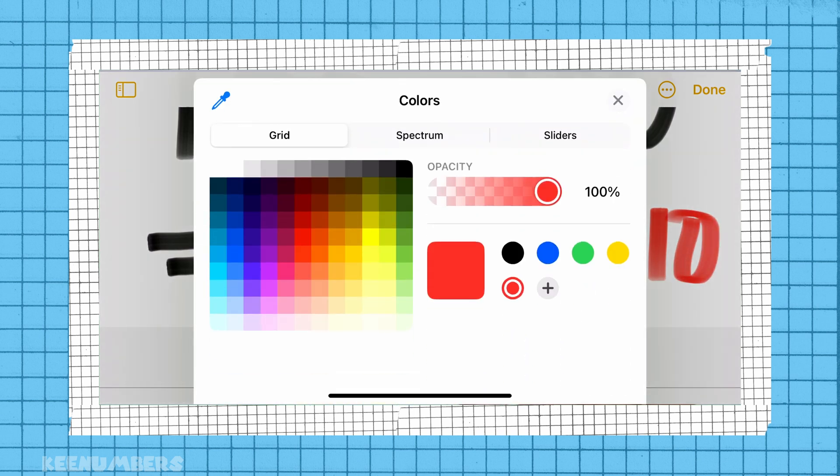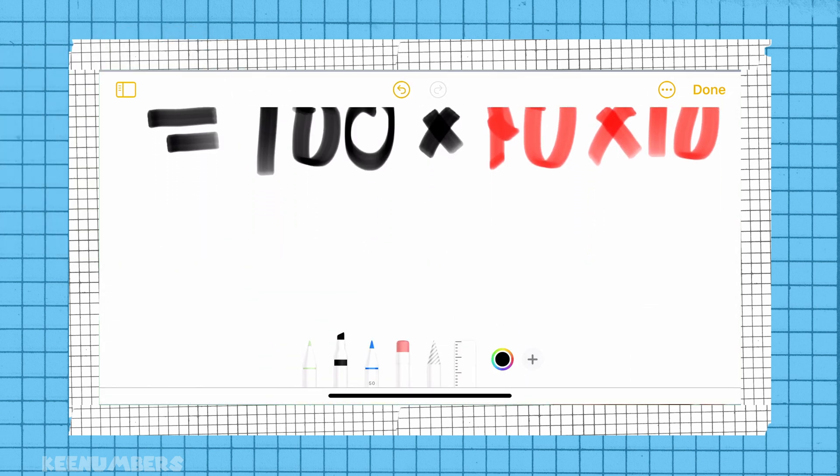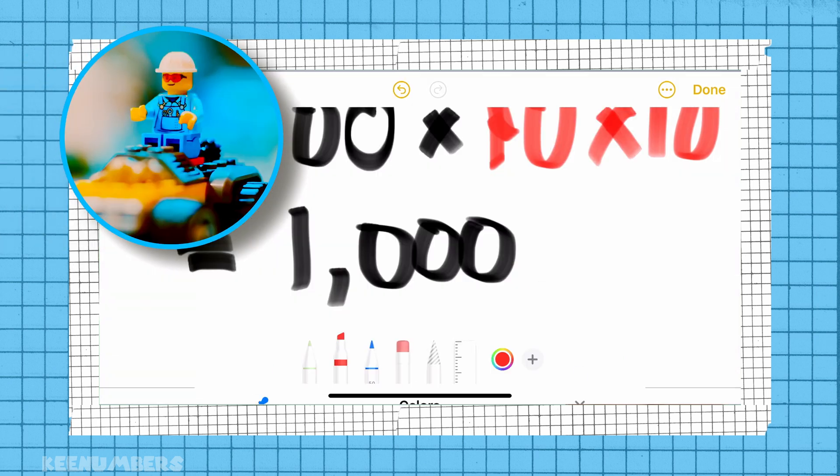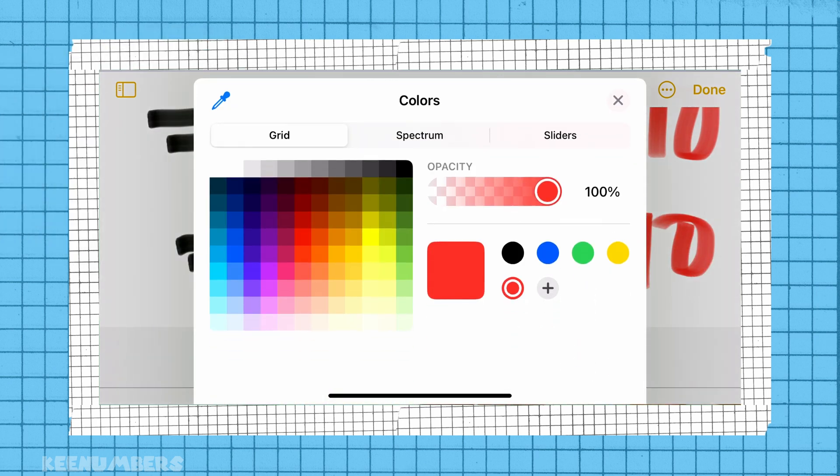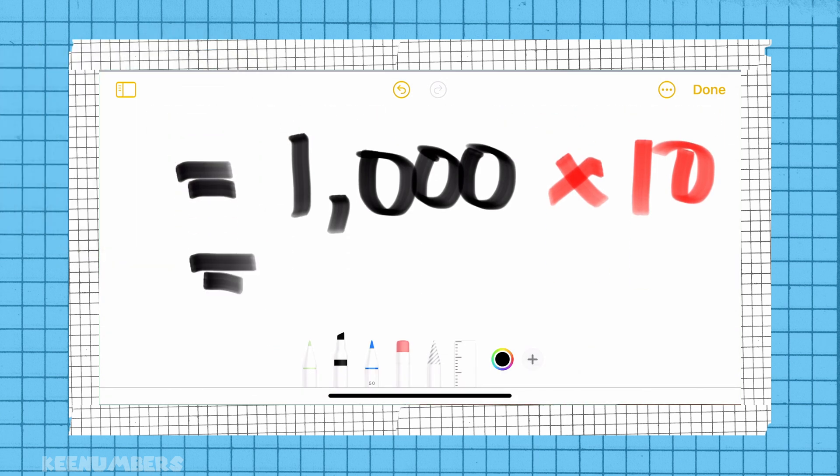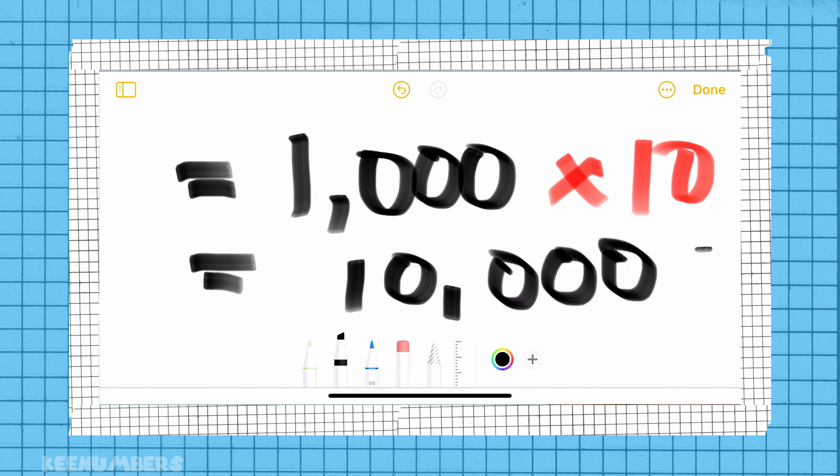Well, we know that 100 tens, or you could say 10 one hundredths, that's going to be 1,000. And when you have 10 one thousands, well, it's built into the name. That's 10,000. So 100 squared is 10,000.